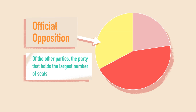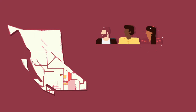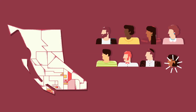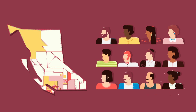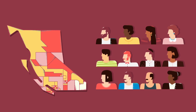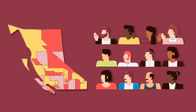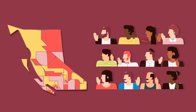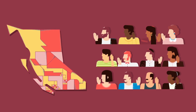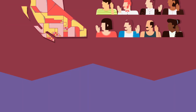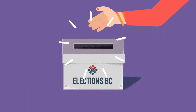By now, you should have a pretty good idea of how parliamentary democracy works in BC. What's important to remember is that it all starts with you, the voter. Each vote counts, and each district matters in the makeup of the future government, which is why participating in elections is so important.